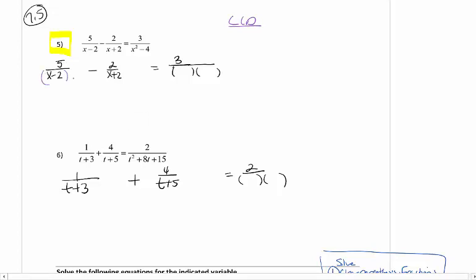Our first step is to find our LCD and any restrictions. Looking at this first one, nothing to factor. Second rational expression, nothing to factor. The last one has a difference of squares, which factors to x plus 2, x minus 2. So my LCD for this problem is x plus 2, x minus 2.